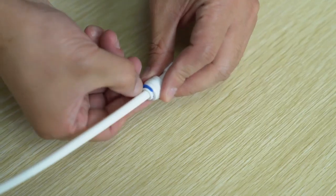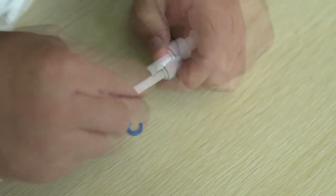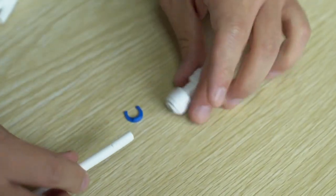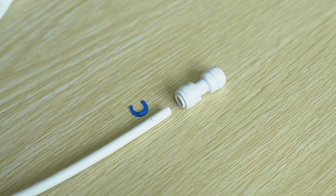To remove the tube, remove the locking clip and hold down the collar against the fitting and pull the tube in the opposite direction to release the grip.